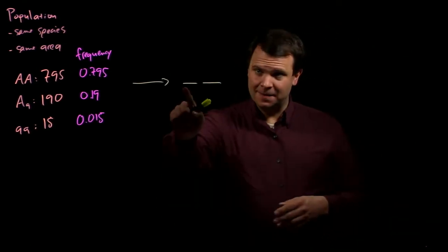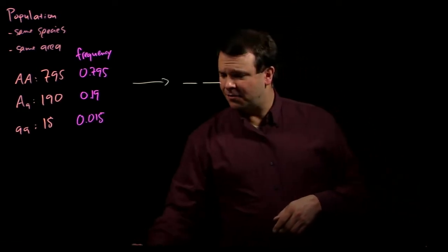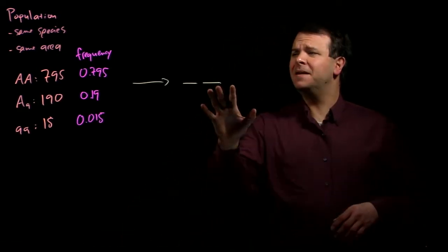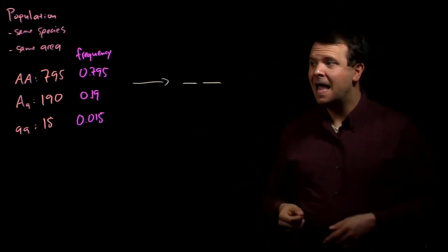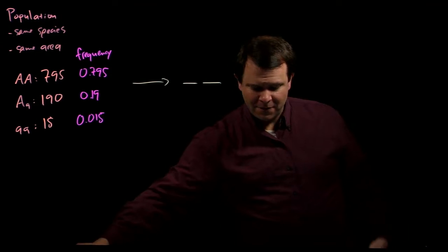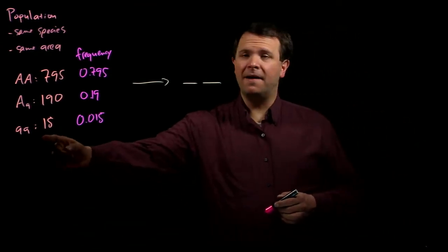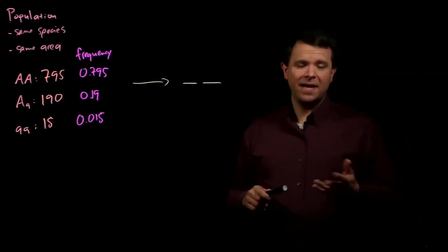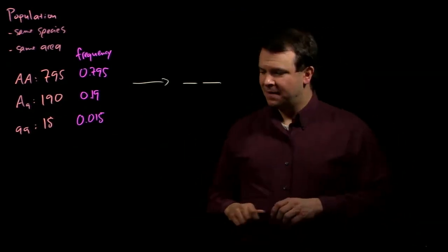One allele from one parent and one allele from another. In order to determine the possible genotypes of the next generation and their likelihood of occurring, we actually have to ask: what are the frequencies of the big A and little a alleles? And we can find that out by looking at the genotype distribution.